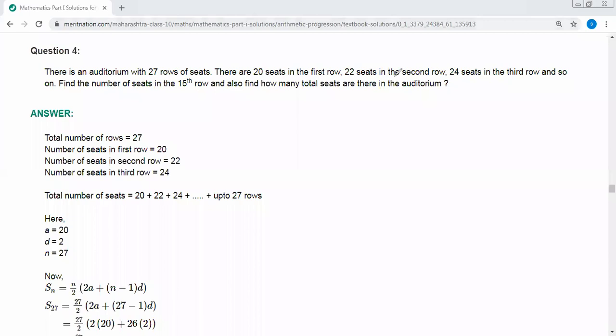Here, the total number of rows is 27 and the number of seats in the first row is 20. Number of seats in the second row is 22. Number of seats in the third row is 24. Therefore, total number of seats is 20 plus 22 plus 24 plus up to 27 rows.